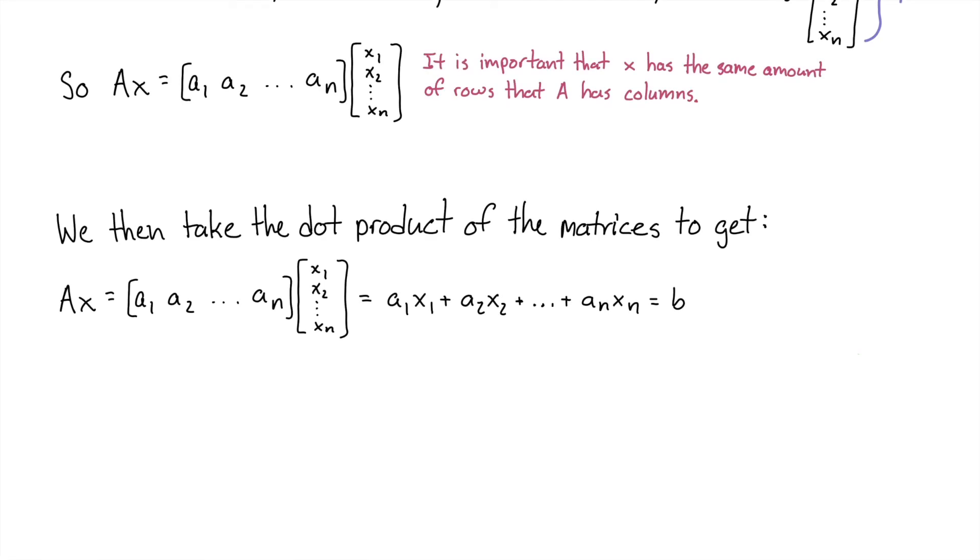AX equals the matrix A1, A2, all the way through AN, times matrix X1, X2, all the way through XN. It is important that X has the same amount of rows that A has columns, otherwise we wouldn't be able to do the matrix multiplication. We then take the dot product of the two matrices and we'll get A1 vector A1 times X1, plus vector A2 times X2, all the way to AN times XN. We're going to label the answer as B. Through matrix multiplication, B will end up having M rows and Q columns.